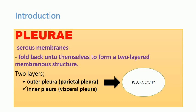What is the pleura? The pleura are serous membranes which fold back into themselves and form a two-layered membrane structure. This two-layered membrane structure has an outer layer and an inner layer. The outer layer is called the parietal pleura and the inner layer is called the visceral pleura.